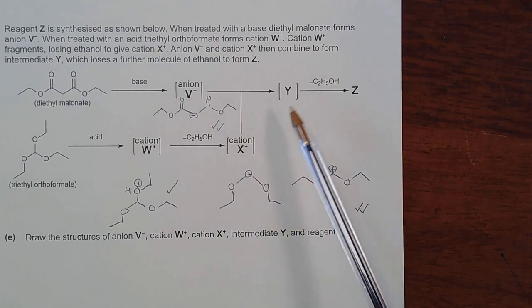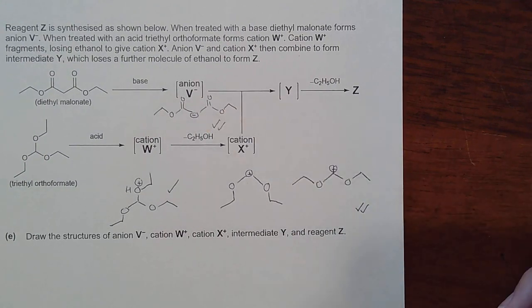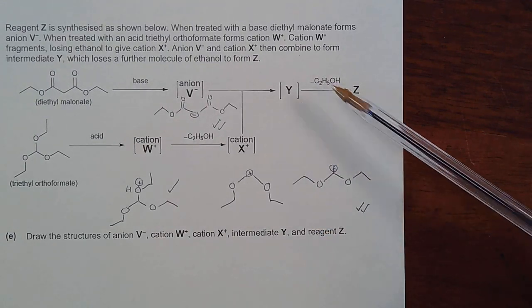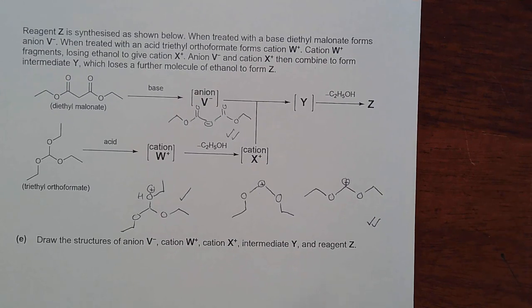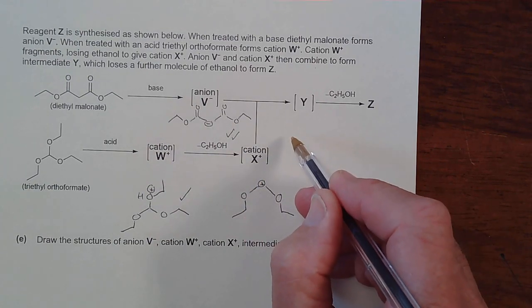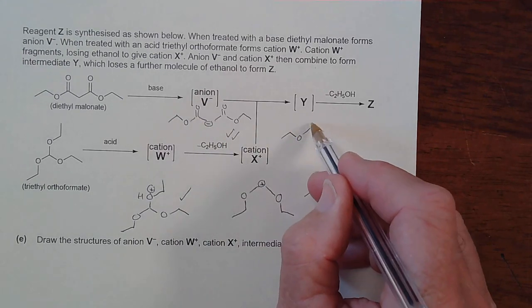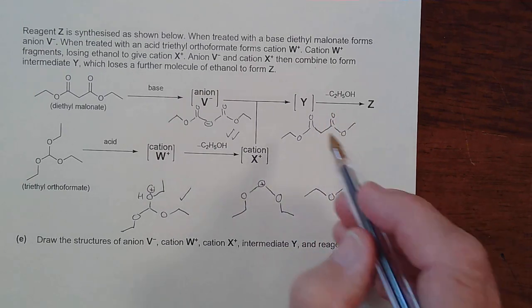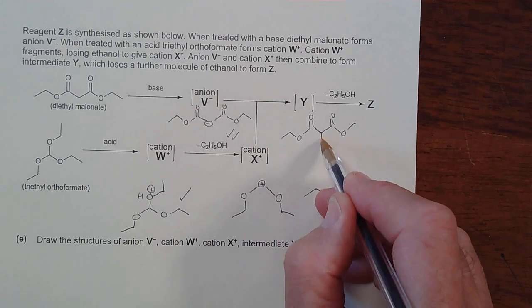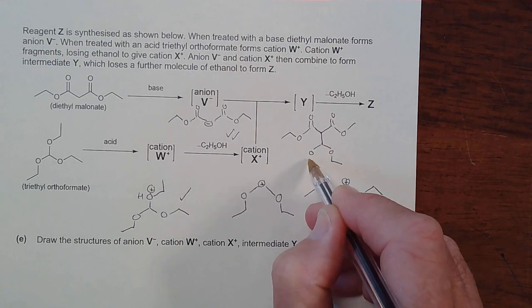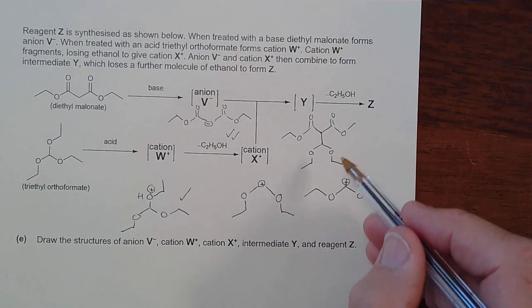Anion V⁻ also scored two marks, which is generous. These two species combine with the positive area interacting with the negative area, producing a relatively complex structure Y. We lose another ethanol before getting to Z. Bringing them together: the structure goes oxygen, C=O, carbon, C=O, O, and then linking out to the two oxygens with ethyl groups — that is the structure of Y, earning one mark.